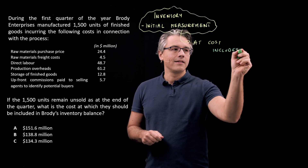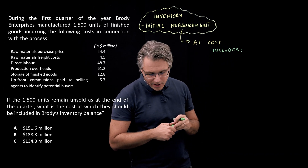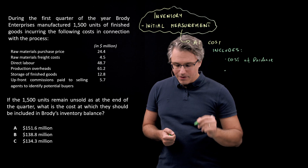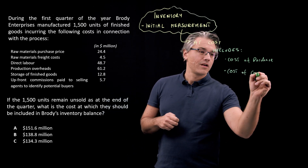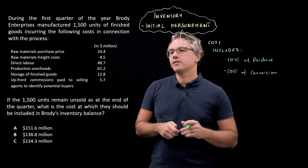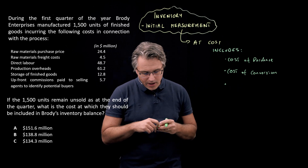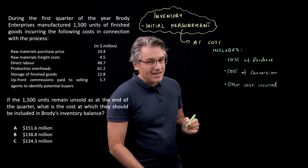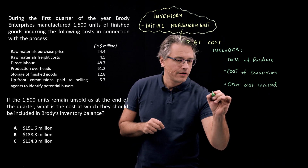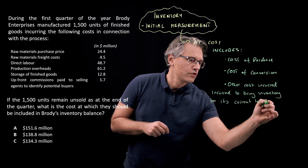Let me list the items that should find their way into the initial book value of inventory. Well, this should include the cost of purchase — how much did we pay for the actual thing? The next one is the cost of conversion — how much did it cost us to convert, in this case, the raw materials into the finished goods? We did incur some direct labor costs, production overheads, etc. And the final item is other costs incurred in bringing the inventory to their present location and condition.